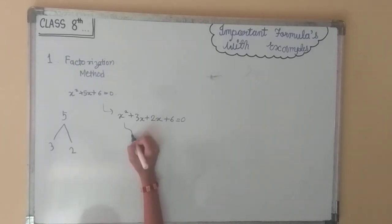Now, we can take x common here and 2 common here. So x(x + 3) + 2(x + 3) = 0. Now, (x + 2)(x + 3) = 0.